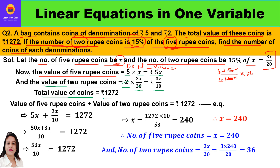The total value of coins is 1272, and this total consists of the value of 5-rupee coins plus the value of 2-rupee coins. So 5x plus 3x by 10 equals 1272. Taking LCM of 10: 10 times 5x is 50x, giving us 50x plus 3x upon 10 equals 1272.